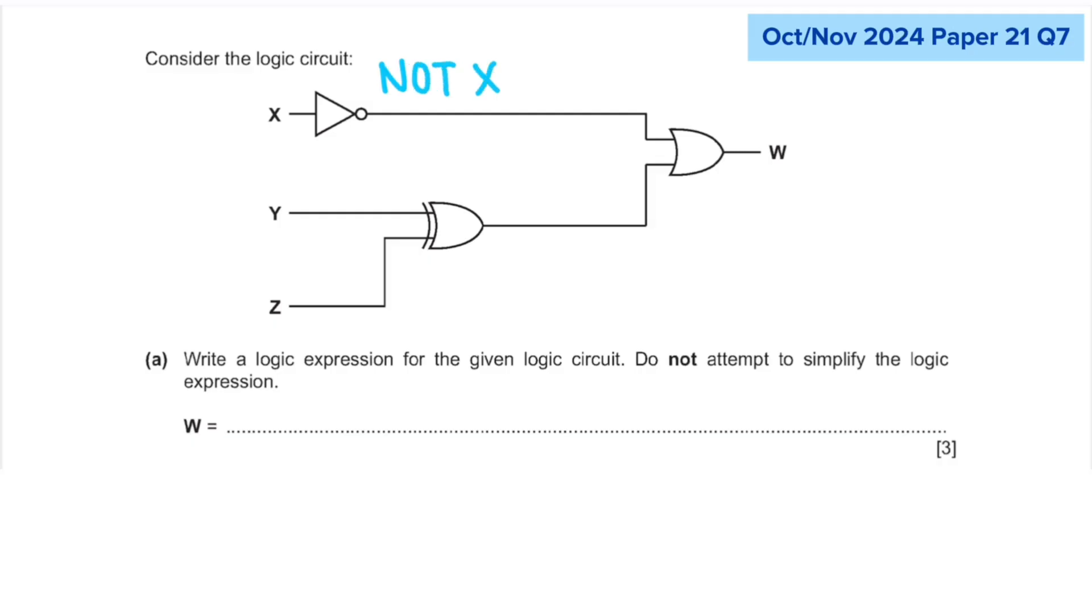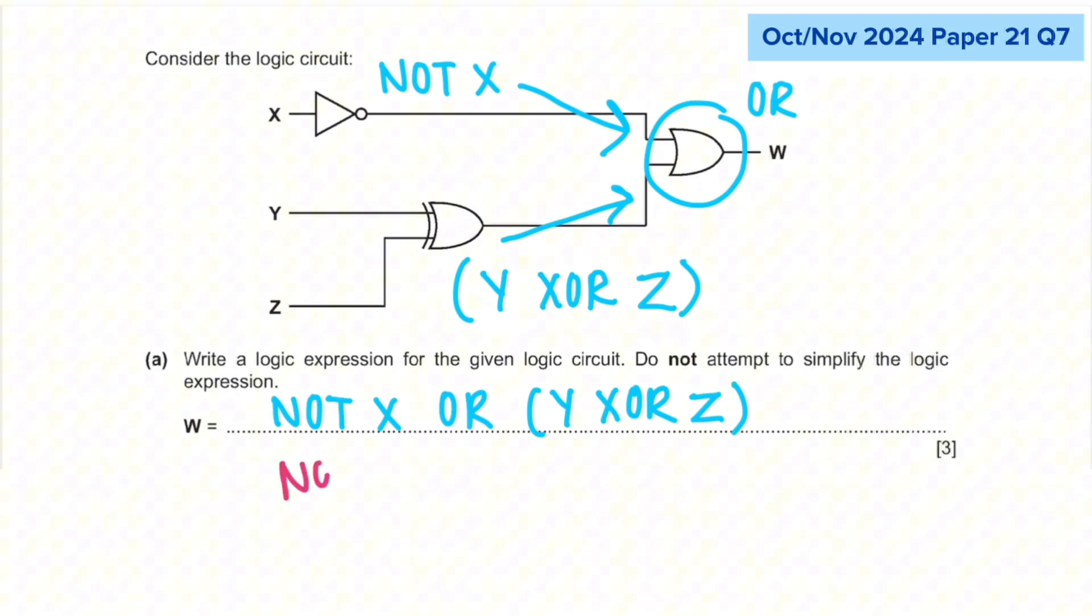Down here, we have the EXOR gate that uses Y and Z as its inputs. So this section performs the function Y XOR Z. And here, there is an OR gate that uses the result of the previous two operations to produce the output W. So when we look at the big picture, our final answer is NOT X OR (Y XOR Z). Also note that you have to put the Y XOR Z in brackets to show that it comes before the OR operation.